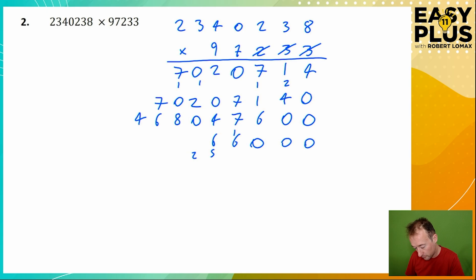7 times 2 is 14, plus the carried 2 makes it 16. 7 times 0 is 0, but we've got the carried 1 makes it 1. 7 times 4 is 28. 7 times 3 is 21, and the carried 2 makes that 23. 7 times 2 is 14, and the carried 2 makes it 16.